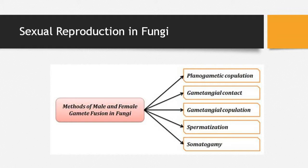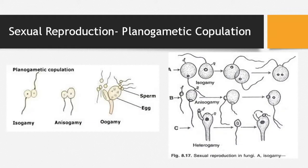Now we will look at four or five methods of sexual reproduction through diagrams: plasmogamic copulation (planogametic copulation), gametangial contact, gametangial copulation, spermatization, and somatogamy. The first diagram shows lower fungi — in isogamy, both fusing gametes are similar in shape and size; they come into contact and undergo plasmogamy and karyogamy. In anisogamy, one fusing gamete is larger and one is smaller, and plasmogamy and karyogamy occur between them, resulting in a diploid condition.